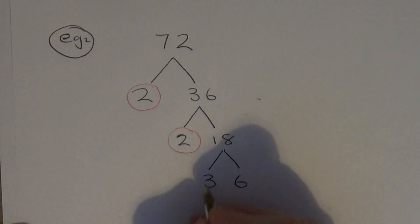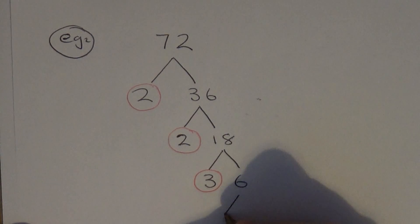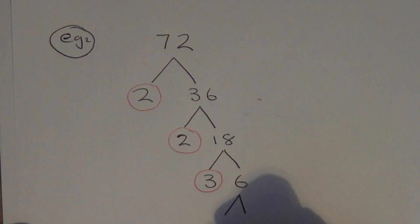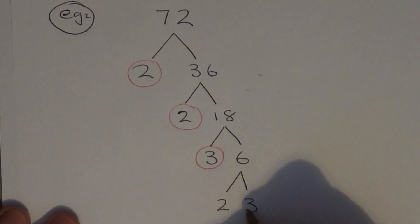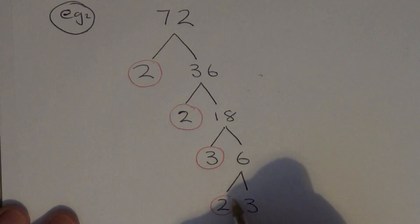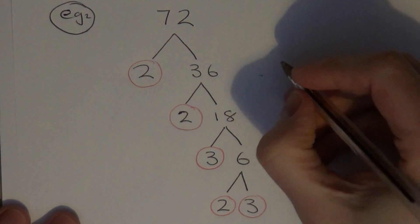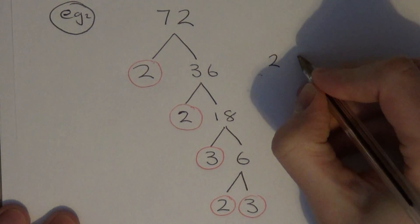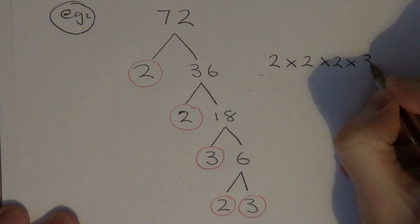3 is prime so circle it. 6 isn't prime so split it up again — this time I'm going to go with 2 times 3. All we need to do now is write down our product of prime factors, so if we put all these numbers together and put multiplication signs between each one.